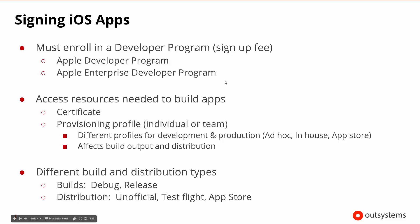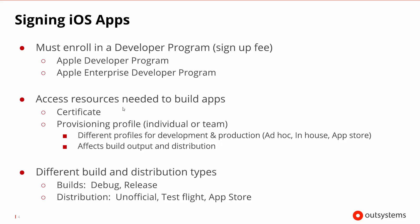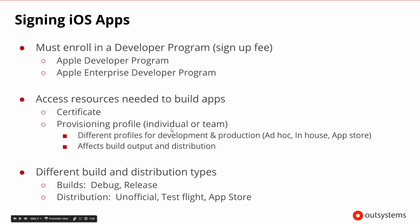If we start with signing our apps, what does it take to go ahead and sign an iOS app? The first thing you have to do is enroll in a developer program, and there is a sign-up fee. Apple provides two programs: the Apple Developer Program for individuals and the Apple Enterprise Developer Program for different types of organizations. Once you enroll, you can access the resources you need to build apps — specifically, the certificates and the provisioning profile. If you're an Apple Developer, you'll have an individual provisioning profile, and if you're in the Apple Enterprise Developer Program, you may have an individual and/or a team provisioning profile.